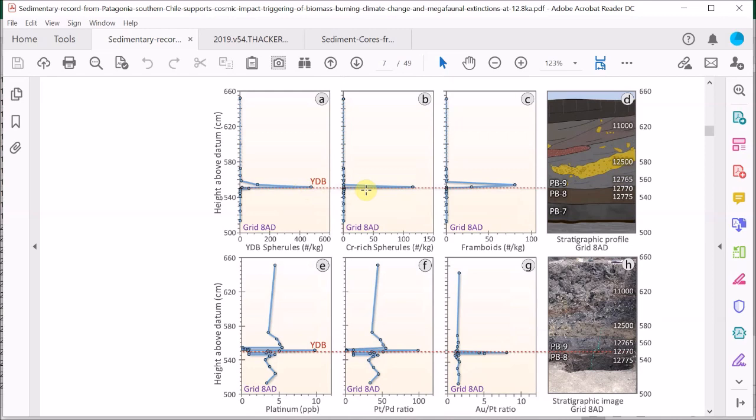They also find some chromium-rich spherules too, which they say are likely to result from the impact with a local basalt, but they rule out volcanism for the origin of those spherules because of the high iron content.